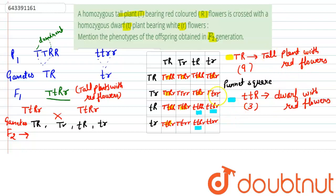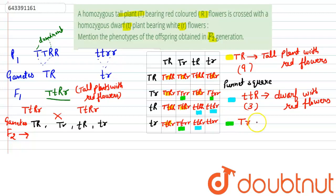The next condition is where there is at least one capital T but the R form is homozygous recessive — small r small r. Since the height has at least one dominant allele capital T, the plant will be tall, but with white flowers. This is based on the law of independent assortment.